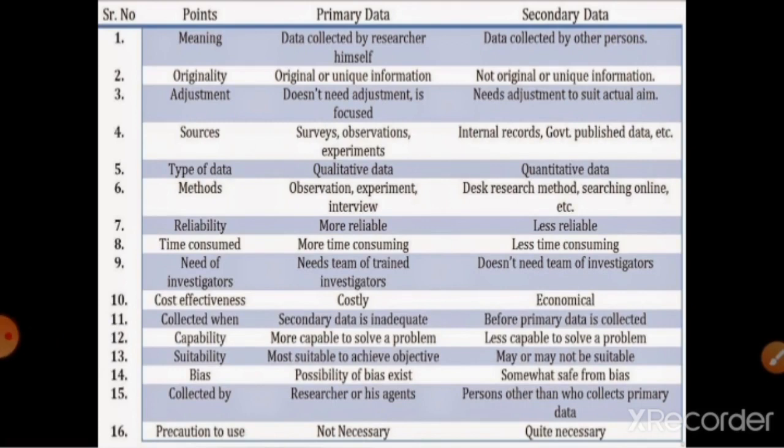Now let's see the differences between primary data and secondary data. In terms of meaning: primary data is collected by ourselves, while secondary data is collected by other persons. In terms of originality: primary data is unique and original because the information is collected by ourselves, whereas secondary data is not original because it is already published in newspapers or available on websites.